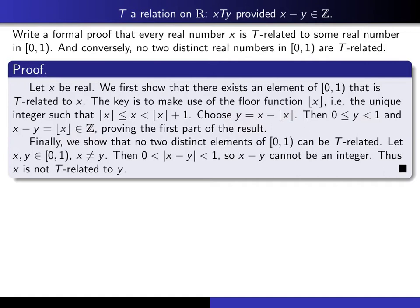So that proves that given this x, we can always find another real number in this interval, such that the difference with x is an integer, and that proves that it is T-related to the original x. So that proves the first part of the result.